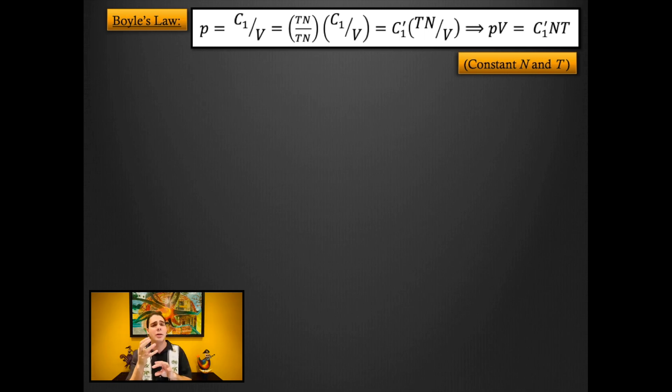For the TN in the denominator we're going to put that under C1 and we're going to call that entire quantity C1 prime. That's why you don't see a TN in the denominator anymore. We're allowed to do that because in the end it's some number that we're going to find out later, and we get it in the form of pressure times volume is equal to C1 prime times the number of molecules times temperature.